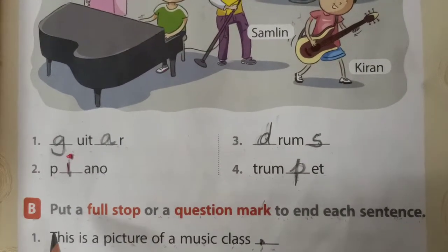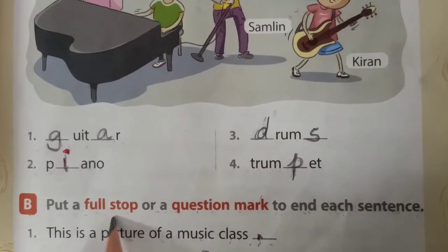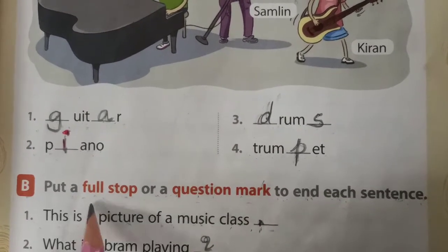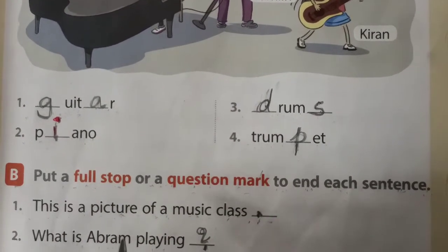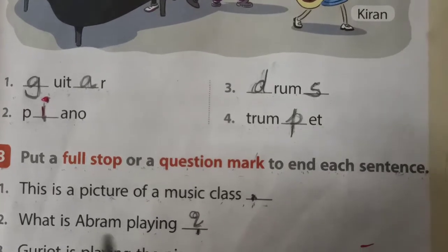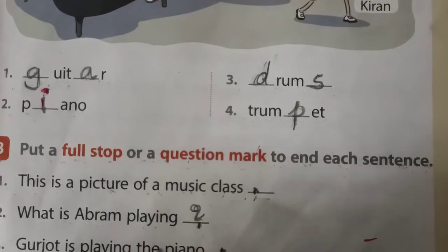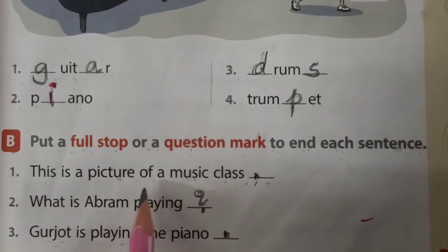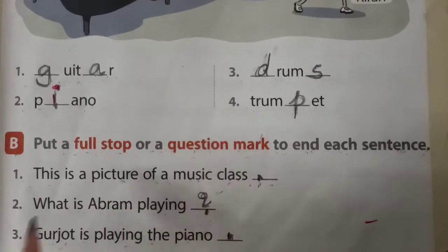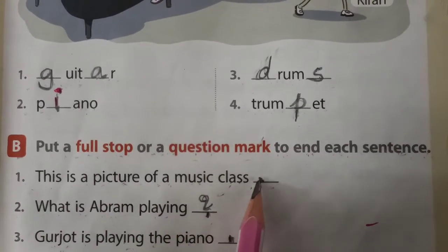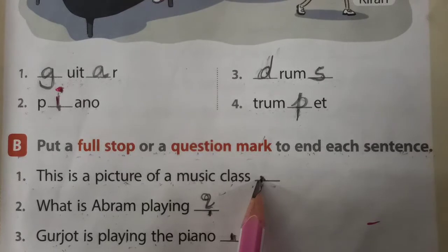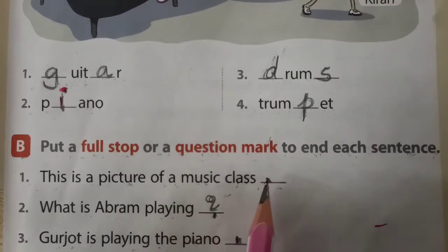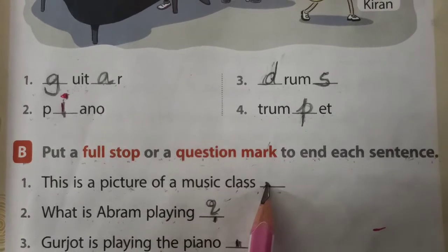Then second one, B. Put the full stop or a question mark to each sentence. Where you need a full stop, where you need a question mark, you should put it. See, first one: 'This is a picture of a music class.' The sentence is complete, so you should put a full stop here.